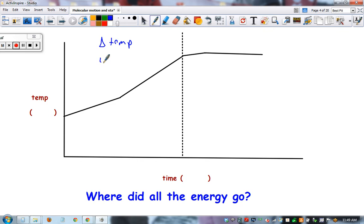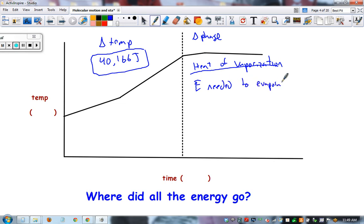Change in temp required 40,166 joules. That was part one. Now we need to do change in phase. In this example, this would be evaporation, so we use the heat of vaporization. That definition is the energy needed to evaporate or condense a material. Evaporate would be positive—you need to add energy to it. Condense would be negative. When it rains, when it goes from steam back down to a liquid, energy is actually released, and it would be a negative answer.